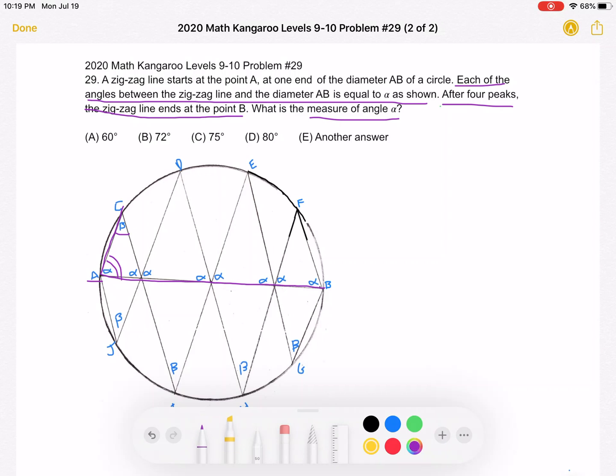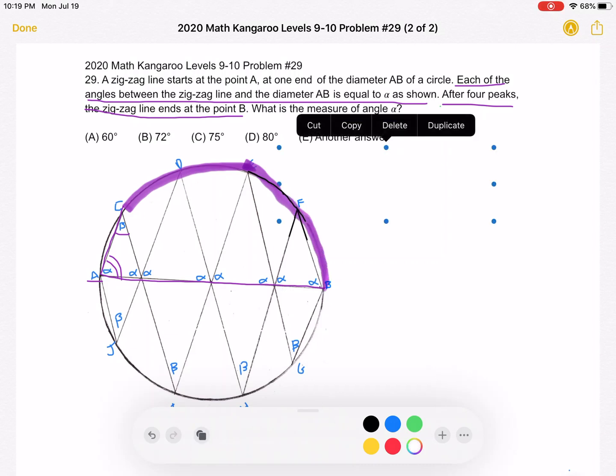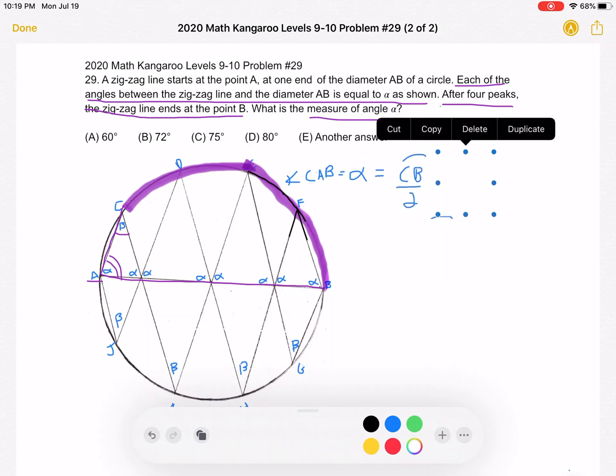So therefore, angle CAB is called an inscribed angle, and something that is nice about working with inscribed angles is that we know that the measurement of the inscribed angle is equal to half the measurement of the angle that it, you can say, opens up to or faces. So in this case, the arc that it opens up to is this arc right here. So the relationship we can come up with is that angle CAB, which we know is equal to a measurement of alpha, is equal to the measurement of arc CAB divided by 2. That's just the definition of an inscribed angle.